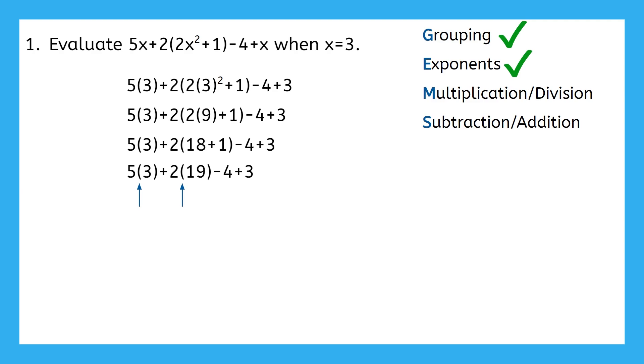So we should calculate 5 times 3 first, then 2 times 19. Here we go. 5 times 3 is 15. Bring down the addition sign, 2 times 19 is 38. Bring down the minus 4 and the plus 3.